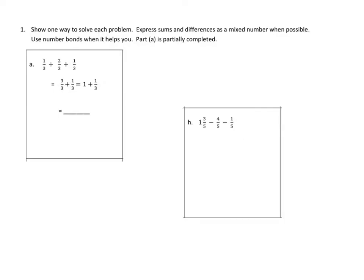Let's take a look at problem number one. We'll read together, and we'll do a couple of these. We are going to show one way to solve each problem. Express sums and differences as a mixed number when possible. Use number bonds when it helps you. Part A is partially completed.